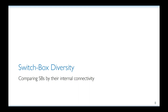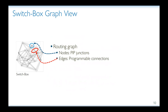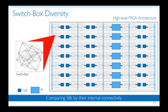Here comes our first set of analysis, which we name switch box diversity. Before continuing, I need to give you some Xilinx terminology. Routing switches, as we know them, are called programmable interconnect points or simply PIPs. Routing multiplexers are then a collection of PIPs that drive a signal. A switch box is a collection of routing multiplexers. And the points of entry to or exit from a switch box are called PIP junctions. If we take a graph view of a switch box, then the nodes become these PIP junctions, and the edges are programmable connections between them. Switch box diversity analysis essentially does comparison of switch boxes by their internal connectivity.